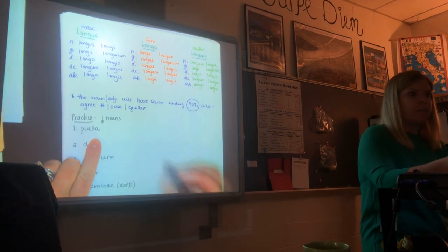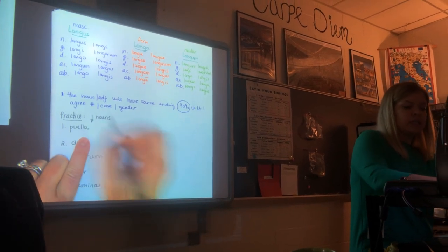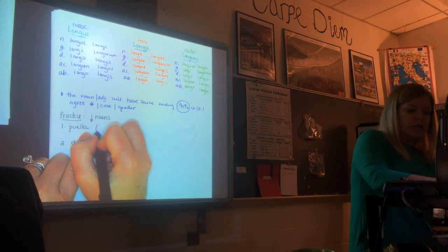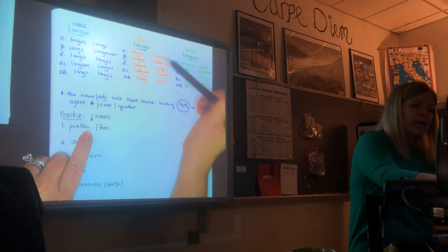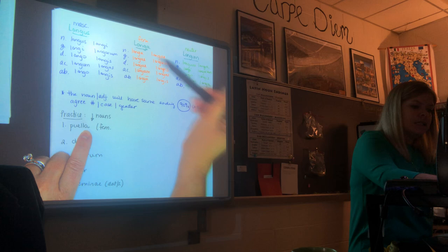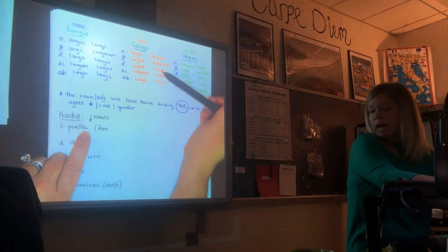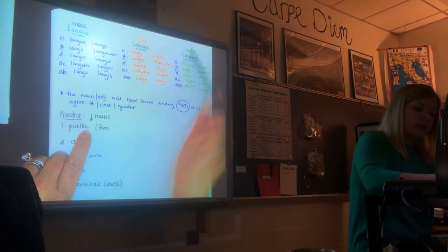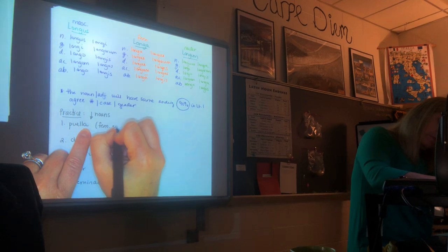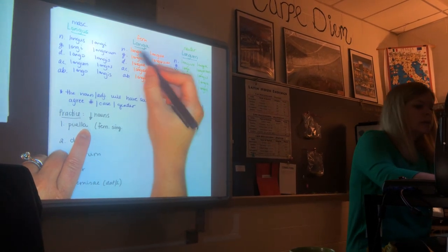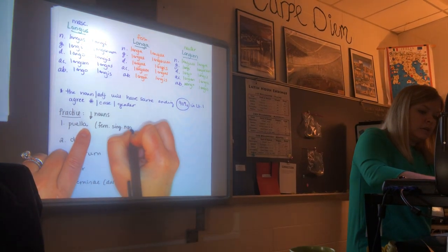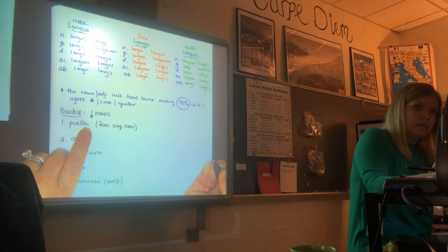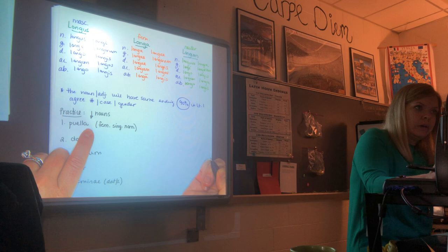So let's take puella. Let's start there. What's its number, case, and gender? Find its gender first. Its gender is? Feminine. Okay. Look at your feminine endings. A. Is it on the singular or the plural side? It's on the singular side. What case? A. Nominative. You know how to do this. Do not make this harder than it is. You know how to do that. Okay.